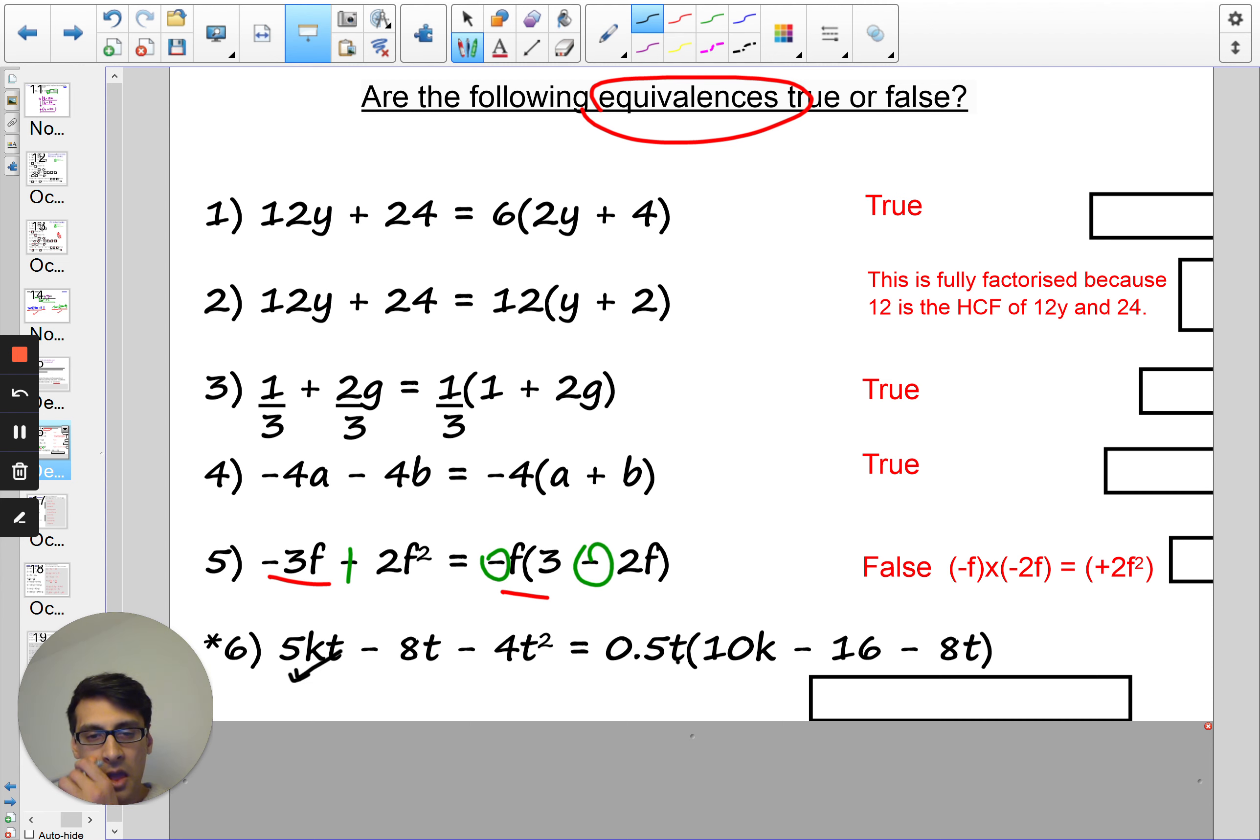And we have half t times negative 6t. So that's going to be negative 8t. That's also correct. And we've got half t times negative 8t. So it's going to be negative 4t squared. So this is, in fact, true.